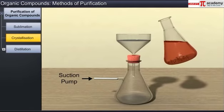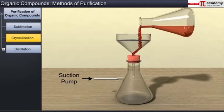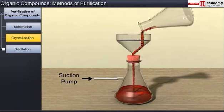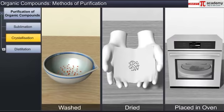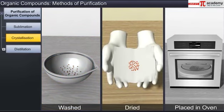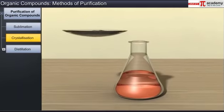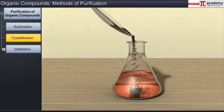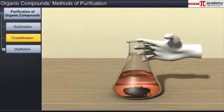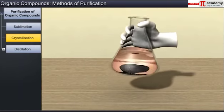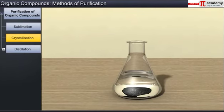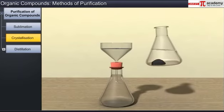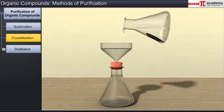The crystals are separated out from the filtrate by filtration. The crystals are washed once or twice with small quantities of pure solvent and dried by pressing between the folds of filter paper and then placed in an air oven. Sometimes impurities impart color to the solution. To remove such impurities, the filtrate is passed through activated charcoal, which adsorbs the impurities. The solution is then filtered and re-crystallized as described above.